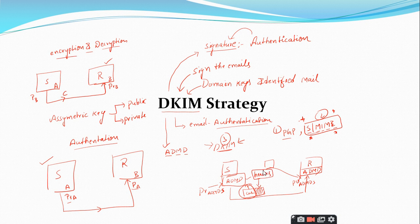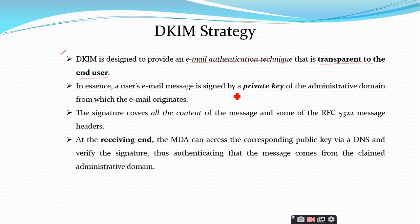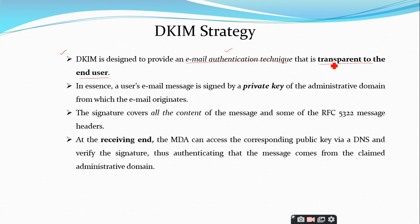That is all about the introduction to the DKIM strategy. A quick recap: DKIM is designed to provide an email authentication technique that is transparent to the end user. It is not tied to a particular entity or end user — it is used as a third party, so any end user can contact DKIM and get signature services. That is why DKIM provides email authentication transparent to the end user.